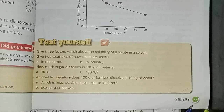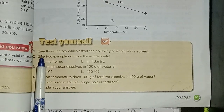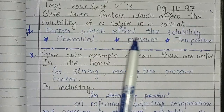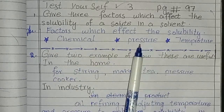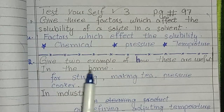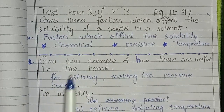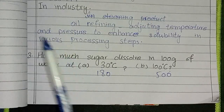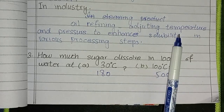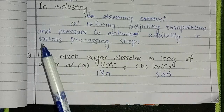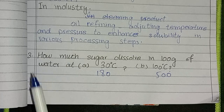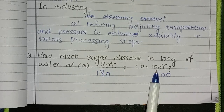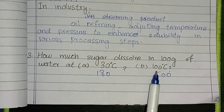Third Test Yourself is on page number 97. First question: give three factors which affect the solubility of a solute in a solvent. The factors which affect solubility are: chemical nature, pressure, and temperature. Give two examples of how these are useful in the home or in industry. At home: stirring when making tea, and using a pressure cooker. In industry: oil refining, and adjusting temperature and pressure to enhance solubility in various processing steps. Third question: how much sugar dissolves in 100 grams of water at 30°C and 100°C? At 30°C, write 180 grams; at 100°C, write 500 grams.